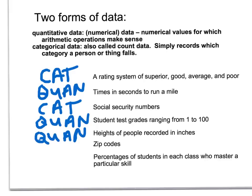Zip codes are sort of like area codes. For example, Kapolei is 96707. It doesn't make any sense to have 0.5, so this would be categorical, even though it's numbers.